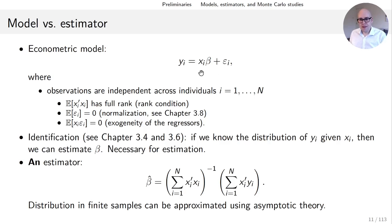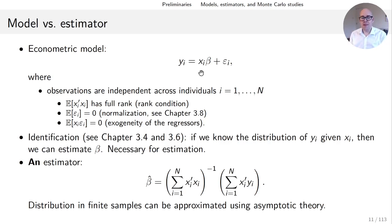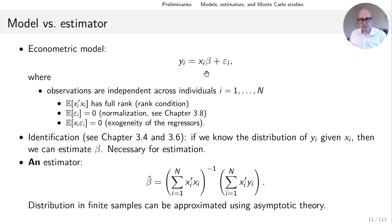Throughout this course, xi will be a row vector with dimension 1 by k, where k is the number of variables on the right-hand side. xi will generally include a constant term — the first element of xi is a one — so the first element of beta will be the intercept. Beta is k by 1, so xi·beta together is 1 by 1, as usual.